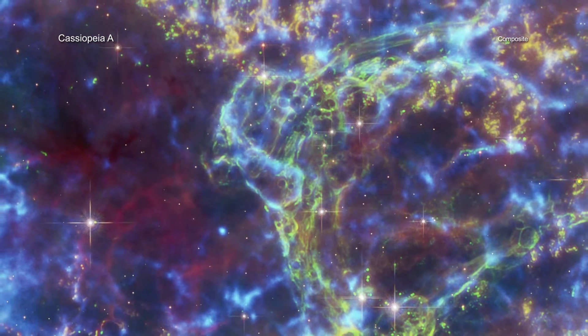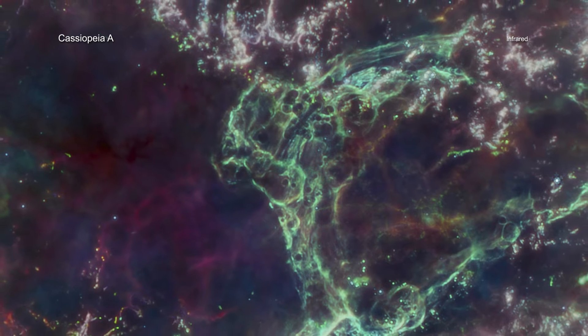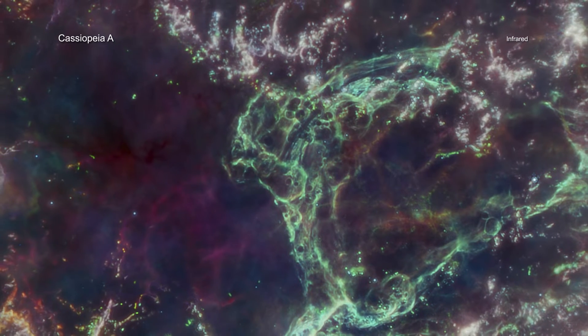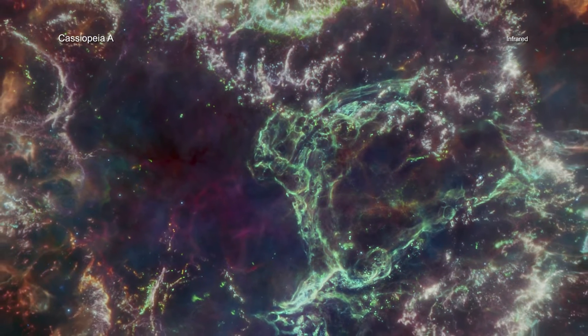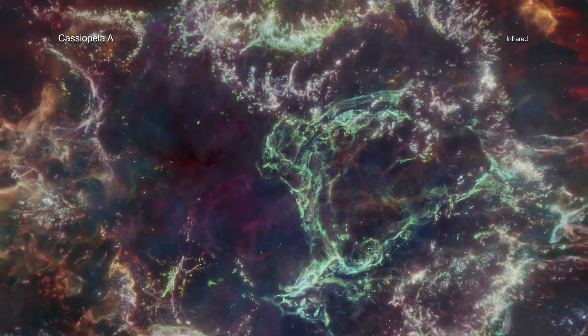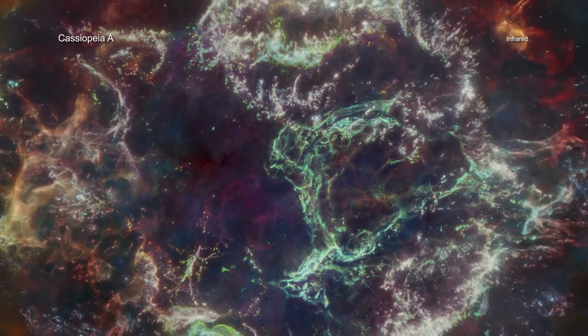The curious structure was first identified in Webb's infrared data from April 2023. The origin of this feature, dubbed the Green Monster because of its resemblance to the wall in left field of Fenway Park, was not clear.